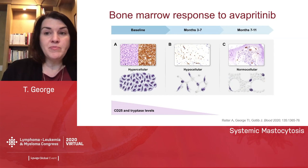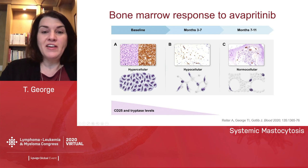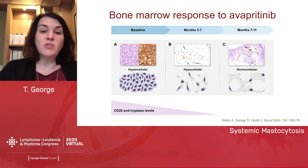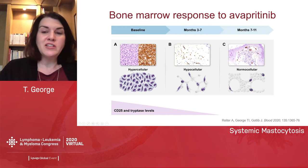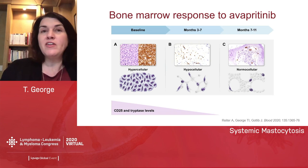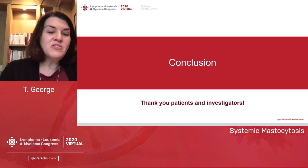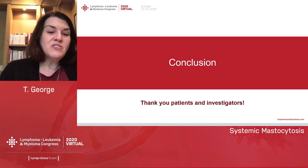The bone marrow response to avapritinib proceeds in stages: at baseline there are dense multifocal aggregates of mast cells co-expressing CD25. By months 3 to 7, the bone marrow becomes hypocellular with only loose aggregates. By months 7 to 11, you have a normal cellular bone marrow with normal numbers of mast cells, possibly occasional atypically shaped cells, but with a normal phenotype — lacking CD25 — and a normal serum tryptase level. I'd like to thank all the patients and investigators for making this talk possible.